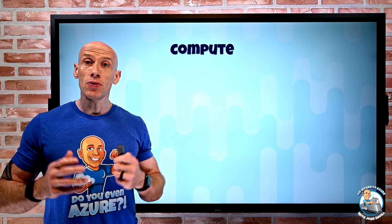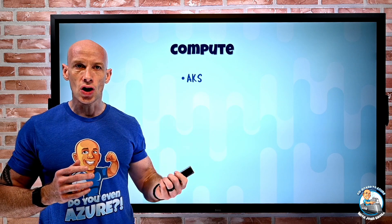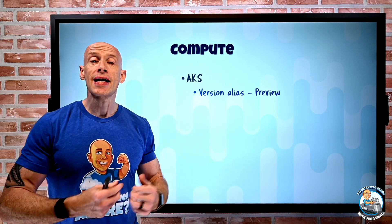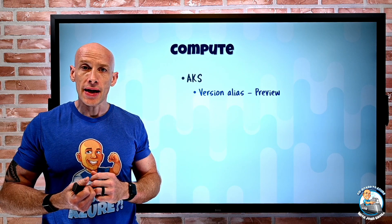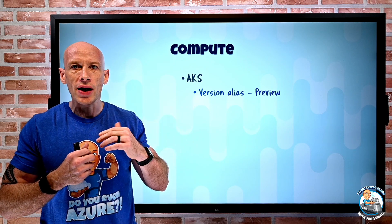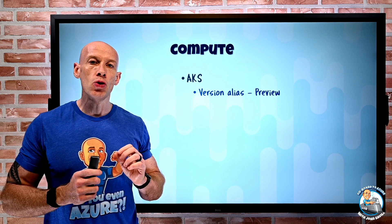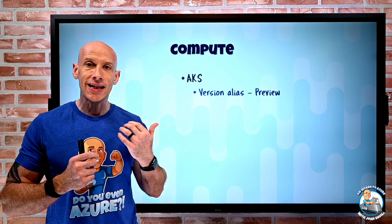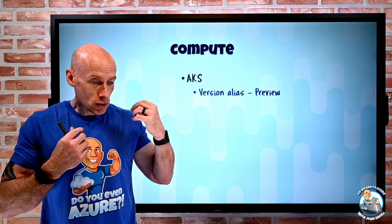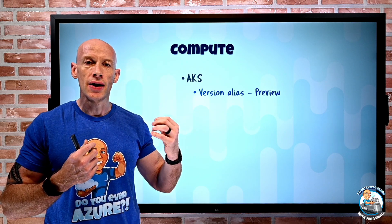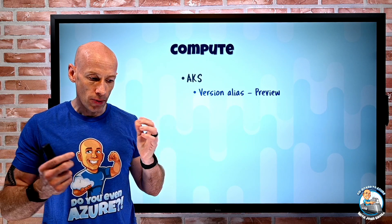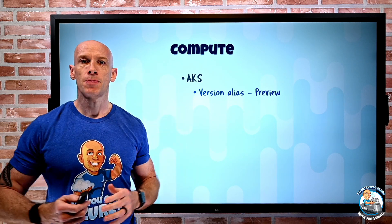On the compute side, a number of updates around Azure Kubernetes Service — that managed Kubernetes service in Azure. The first is now in preview: version alias. When I deploy an AKS cluster, I have to give it the full version including major, dot minor, dot patch — for example, 1.21.7. What version alias lets you do is skip the patch and it will automatically select the latest patch for the minor version you specify. So if I said I want to deploy 1.21, it would check what's the latest patch — say 1.21.7 — and install that. I need the AKS preview extension installed for my AZ CLI.